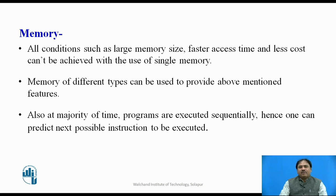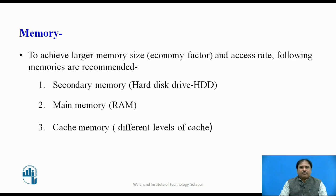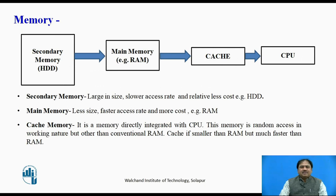It is also found that when we execute a program, we execute instructions in sequence. During execution, we can always predict what the next instruction to be executed will be. Now, regarding how we organize memory: the first is secondary memory, which is a hard disk. It is large in size but requires more time to access, and it gives lower cost. This kind of memory is always present in computers to store the large data required for processes.